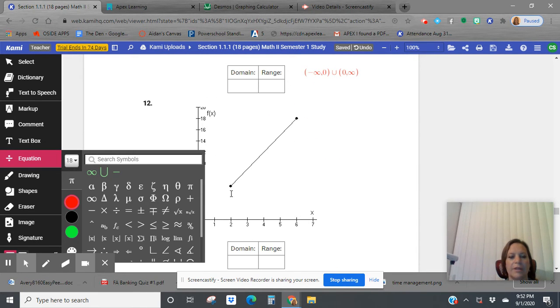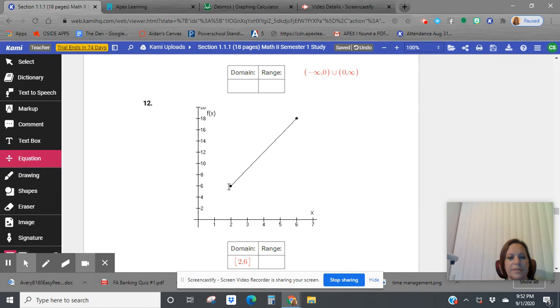Domain of this one goes from two to six. Both are closed dots. And range of this one goes from six up to 18. Also closed dots.